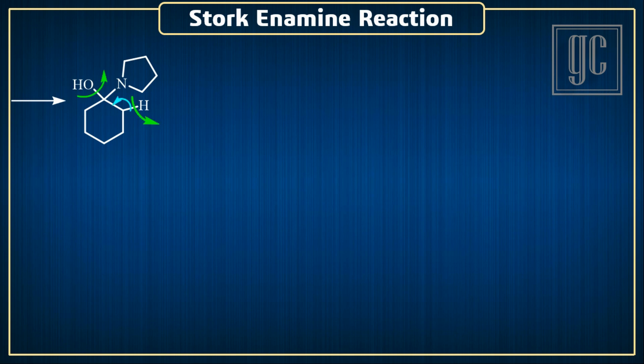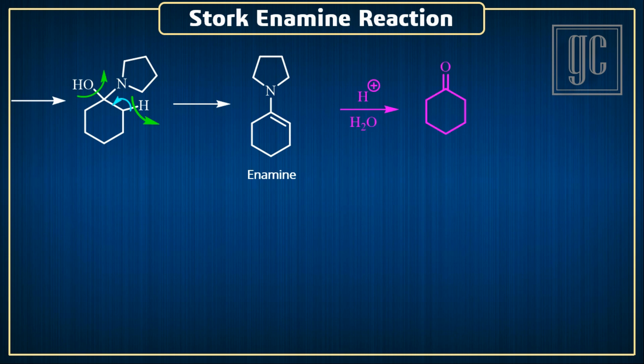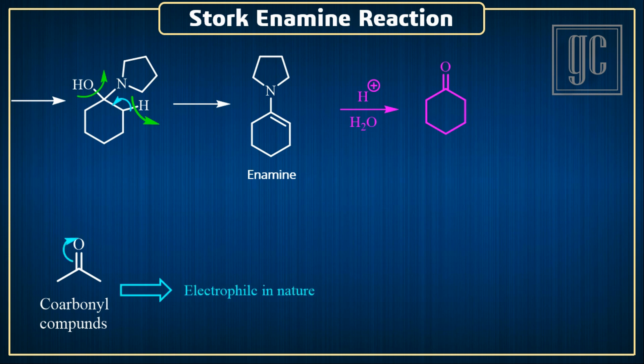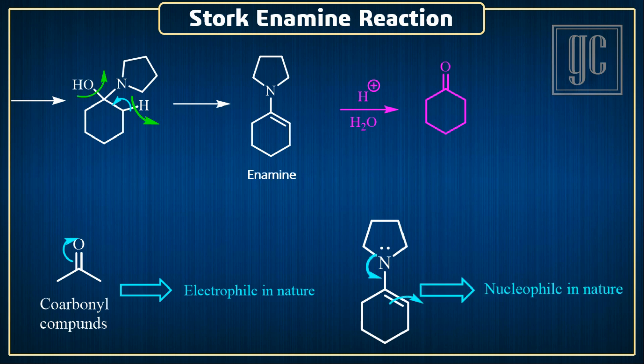The final product, enamine, is formed. This enamine under acid hydrolysis again gives the carbonyl compound. Because of that, this reaction is used to change the electronic nature of the molecule. For example, carbonyl groups are electrophilic (electron-loving) molecules, but enamines are nucleophilic (nucleus-loving) molecules and react with electron-deficient molecules.